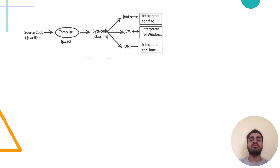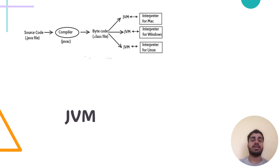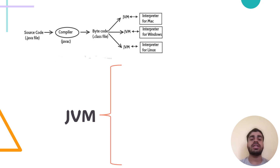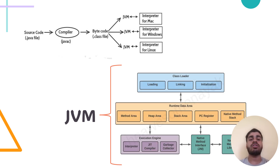We are now in a position to deep dive into the process of how JDK, JRE and JVM work. Let's take a source file and save it with the extension .java. This file is compiled and converted into a set of bytecode, which changes the file extension to .class. This is specifically done by JDK. Bytecode is platform independent but not something a machine can understand. In order to execute it, we first need to convert it into machine-understandable code, which is a part of JRE, and JVM resides inside JRE.